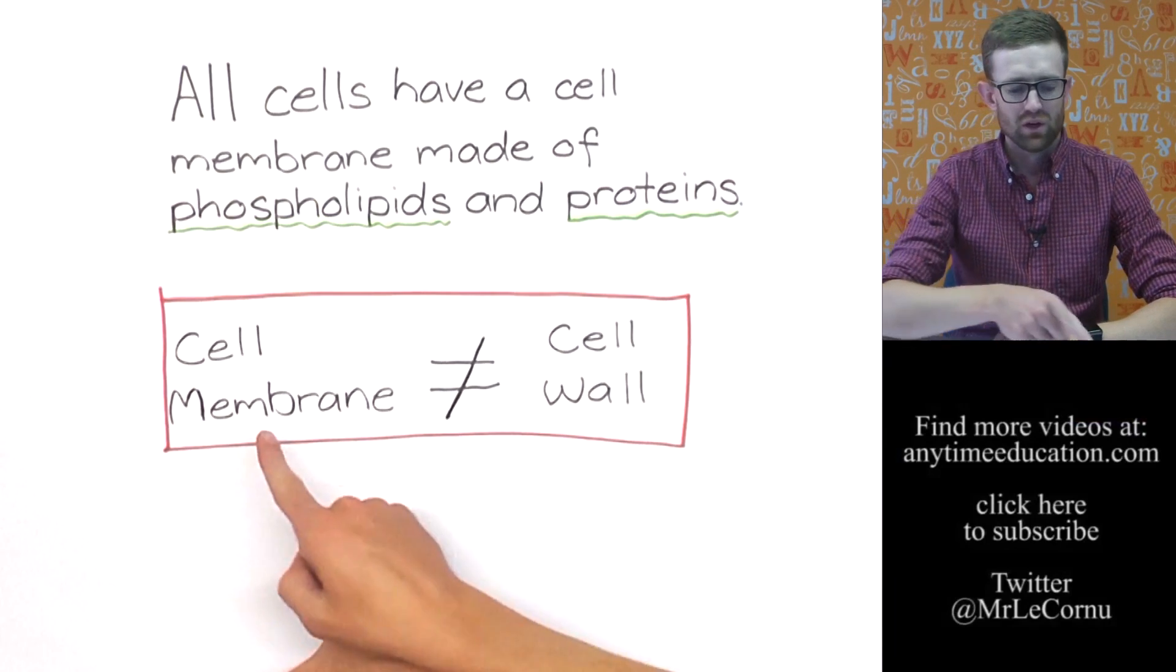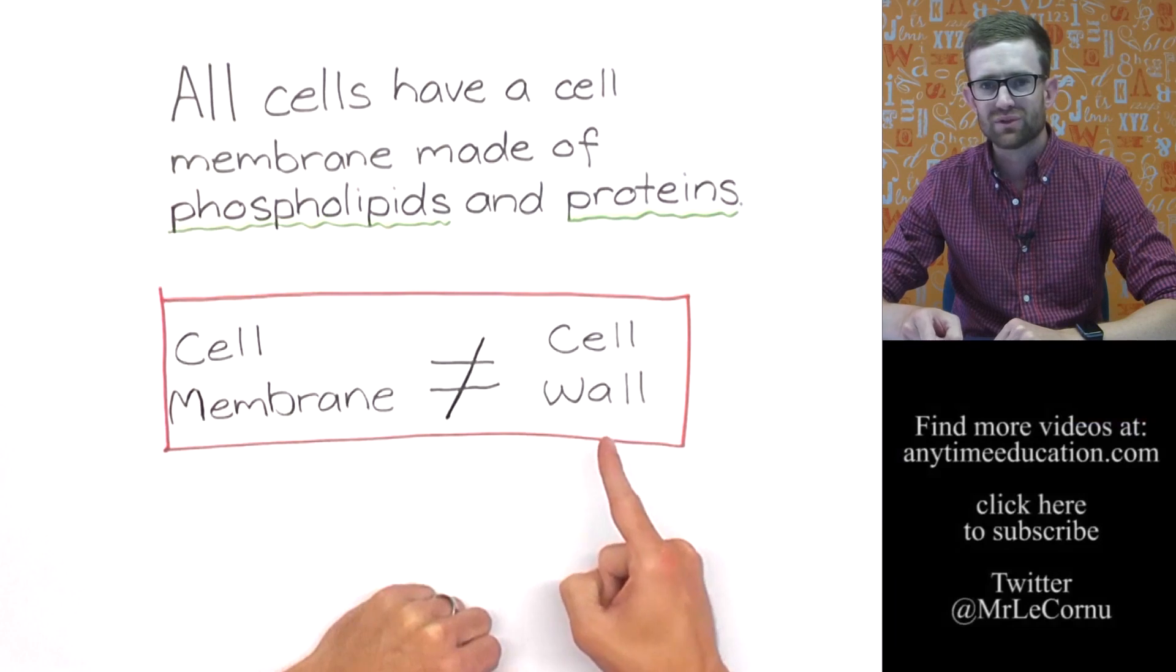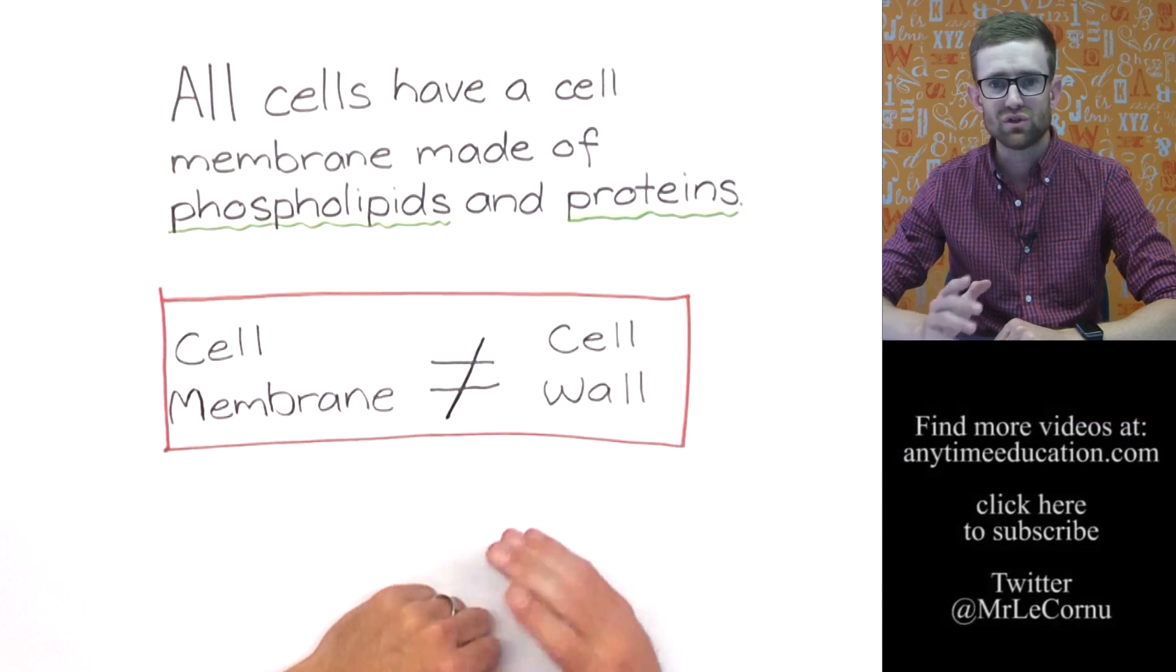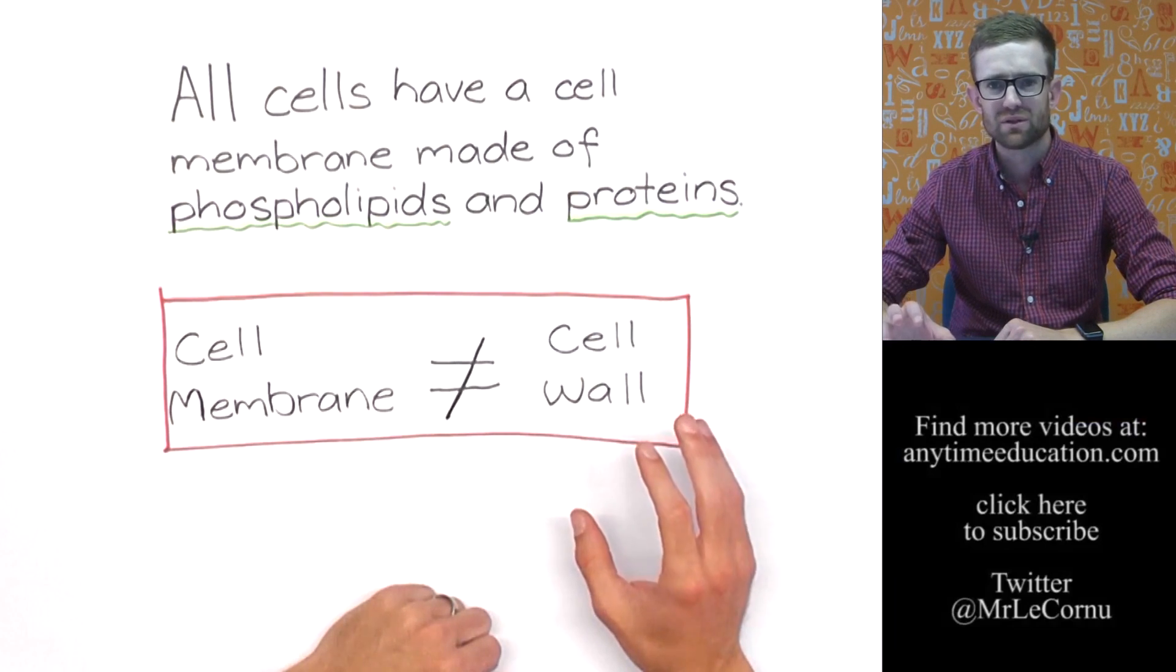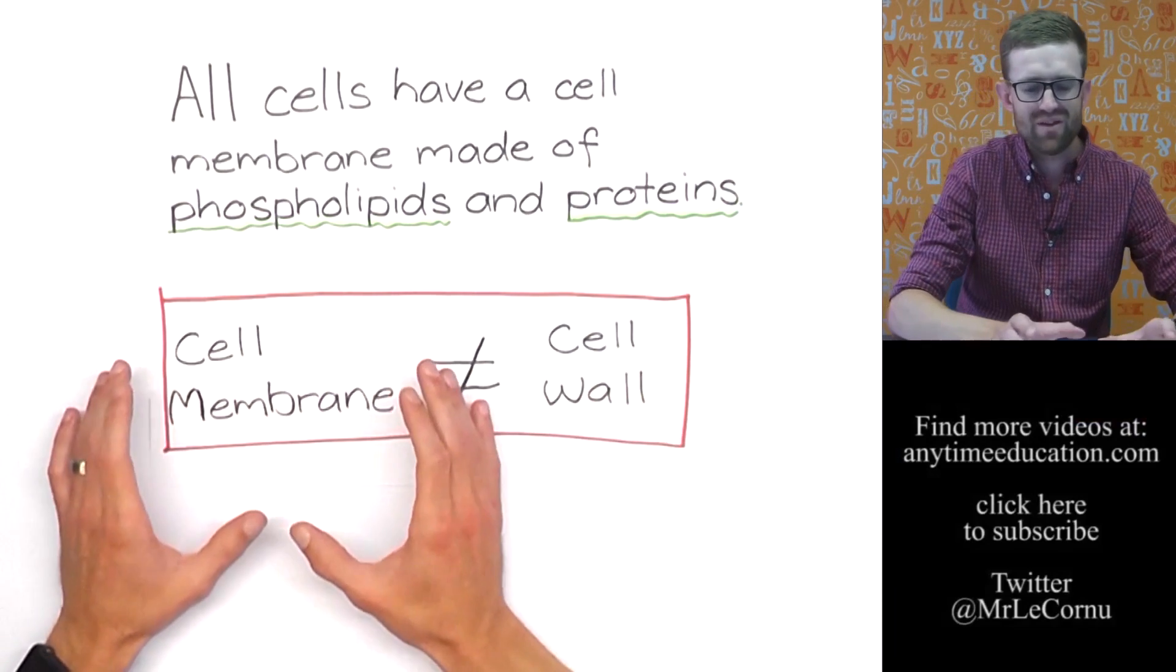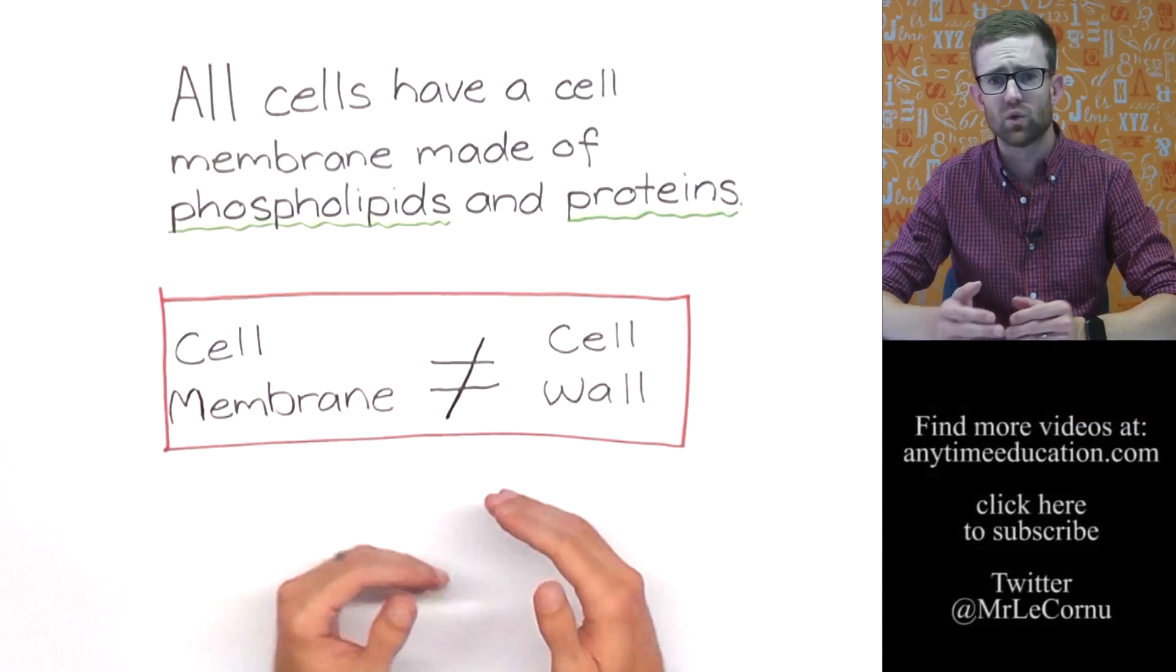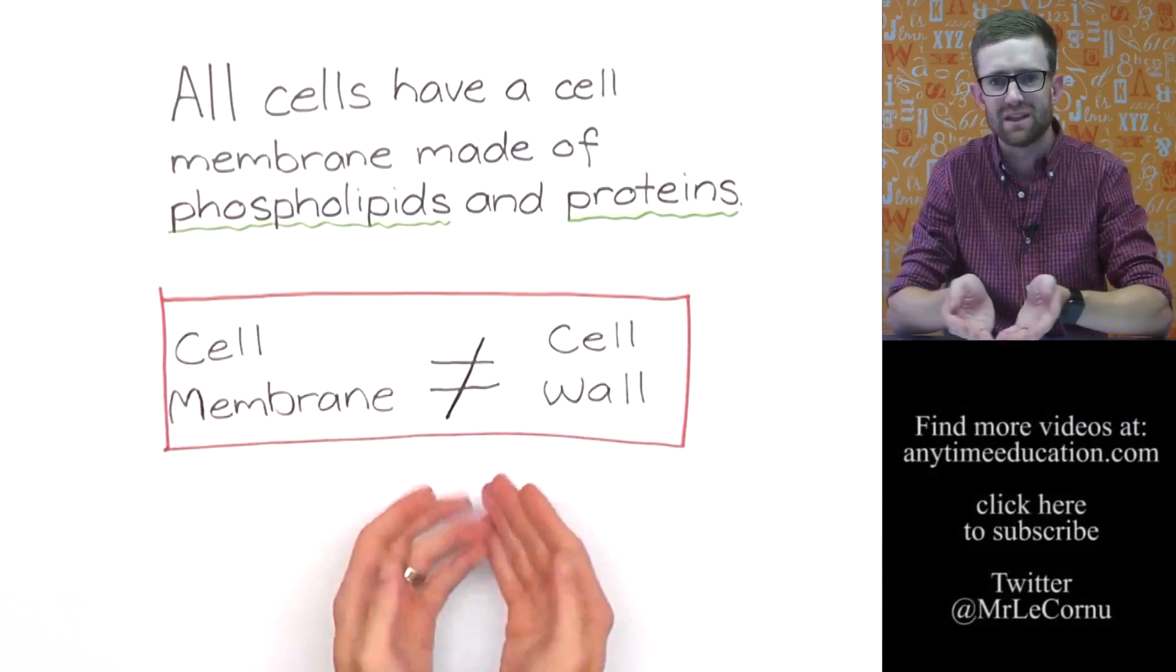All cells have a cell membrane, not all cells have a cell wall. For example, animal cells we know do not have a cell wall. Cells that have a cell wall are cells like plant cells, fungi, and some bacterial cells. So only some have that cell wall while every cell has a cell membrane. If the cell has a cell wall, it's on the outside of the cell membrane and the cell membrane sits within that.